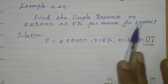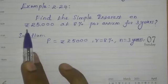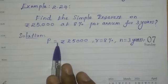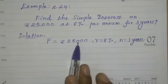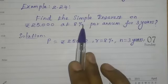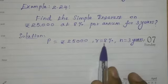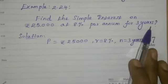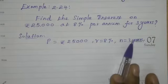For 3 years, rupees 25,000 is the principal amount. First, P equals rupees 25,000, 8% is the rate of interest, R equals 8%, and 3 years, n equals 3 years.